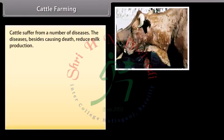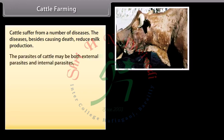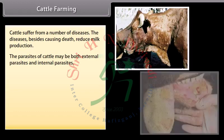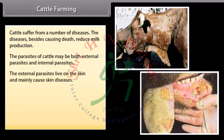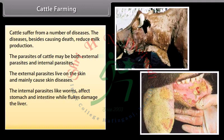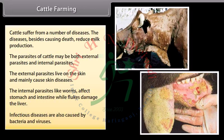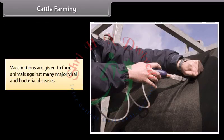Cattle suffer from a number of diseases which, besides causing death, reduce milk production. Parasites may be both external and internal. External parasites live on the skin and mainly cause skin diseases. Internal parasites like worms affect the stomach and intestine, while flukes damage the liver. Infectious diseases are also caused by bacteria and viruses. Vaccinations are given to farm animals against many major viral and bacterial diseases.